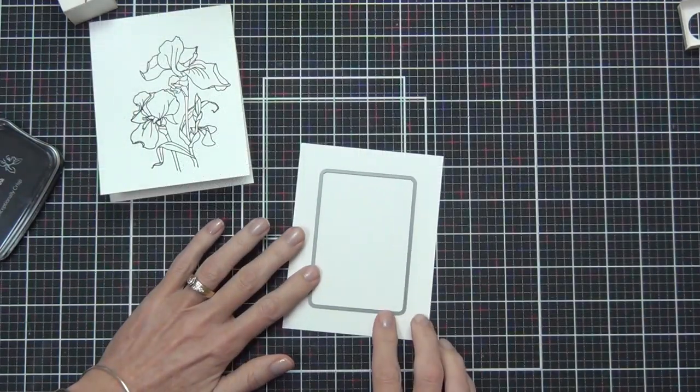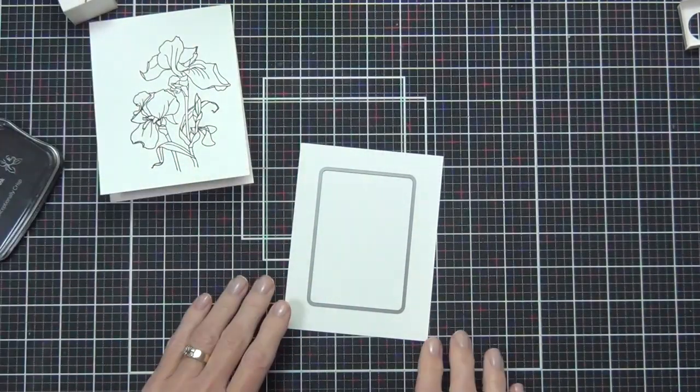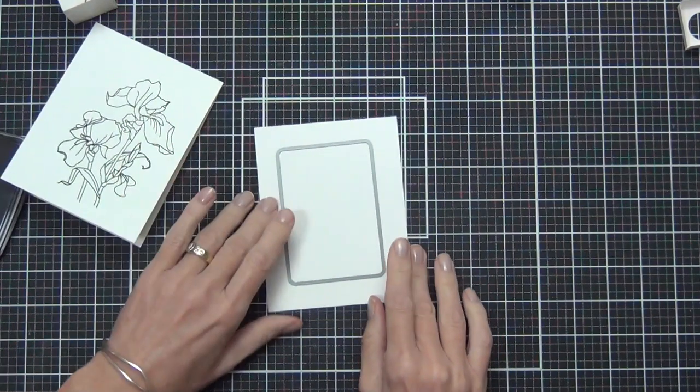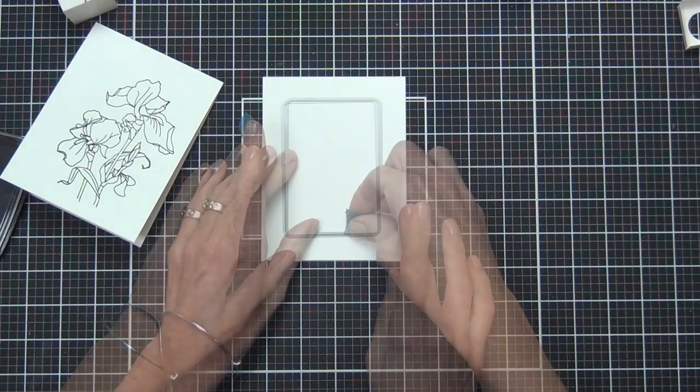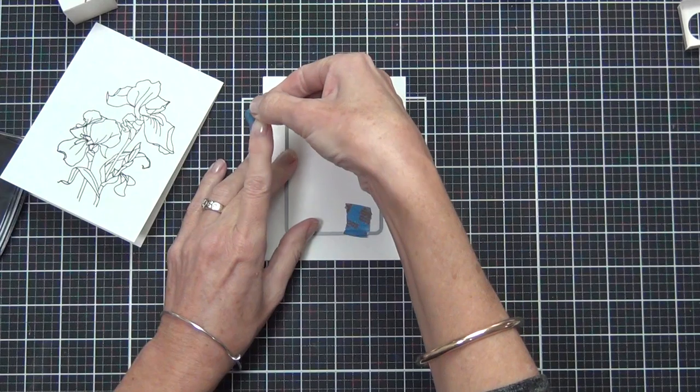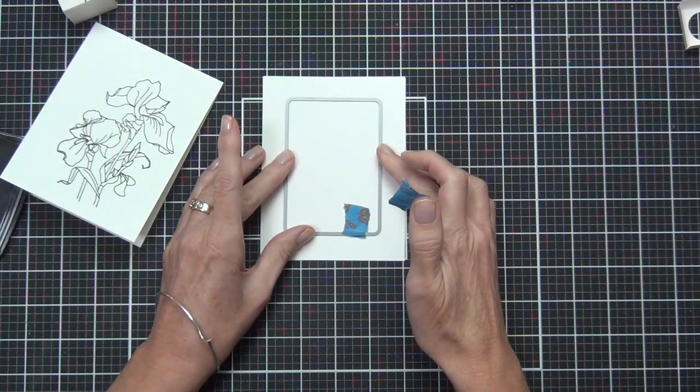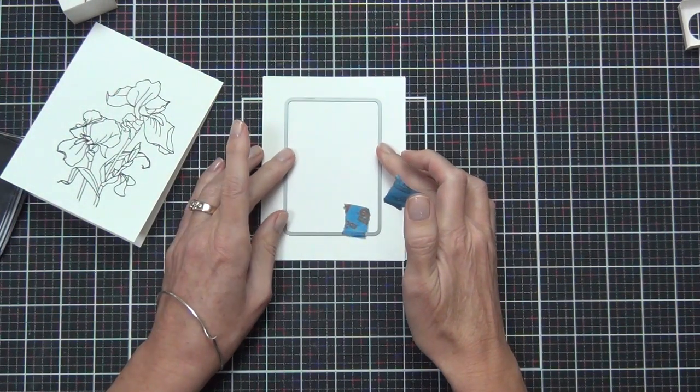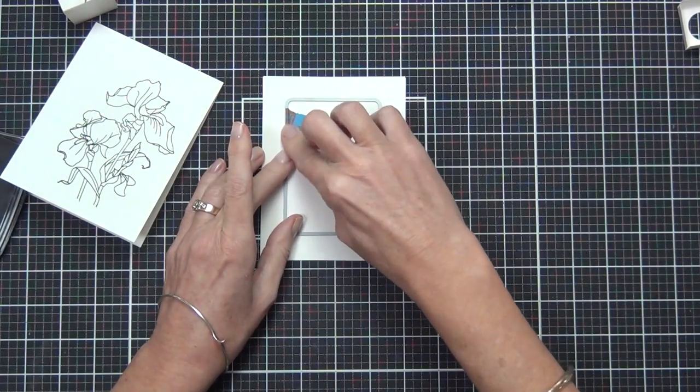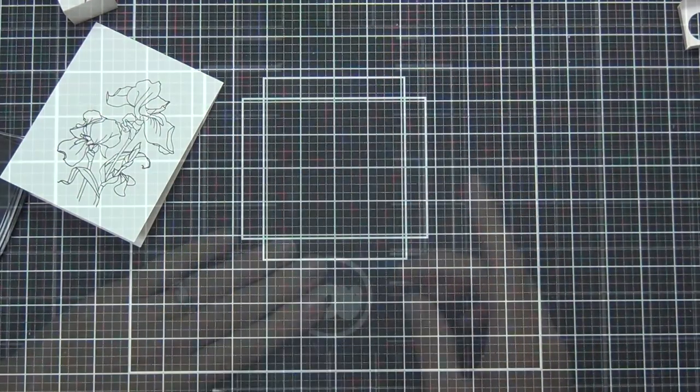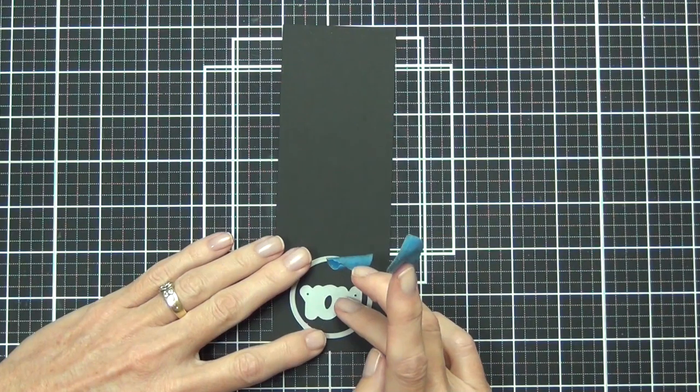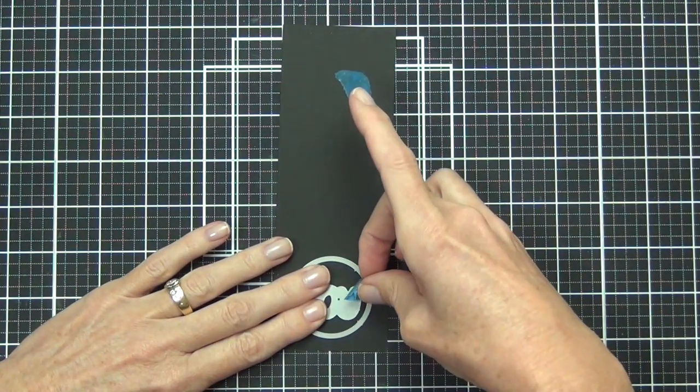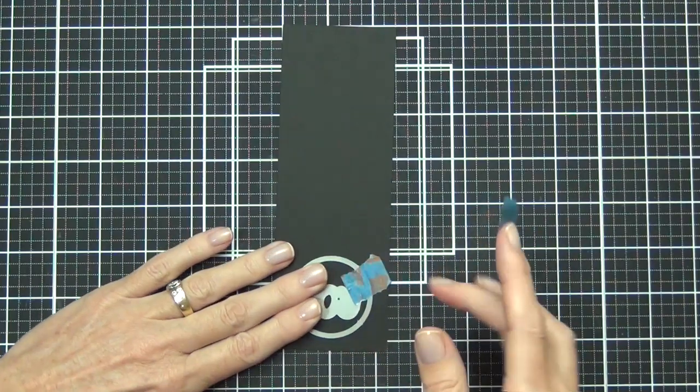alcohol ink foreground that I created. My biggest problem with using either acetate or vellum—I'm sure you're the same—is adhering it without seeing any of the adhesive. So I created a panel using the Rounded Rectangles dies.